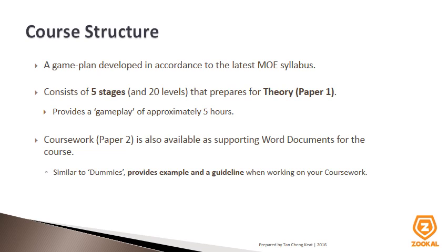The course structure is developed such that it resembles a game plan in accordance to the latest MOE syllabus, and consists of 5 stages and 20 levels that prepares you for FNN Theory Paper 1. This will provide you a gameplay of approximately 5 hours. As for the second part of the subject, which is the coursework, supports are also provided in terms of word documents.